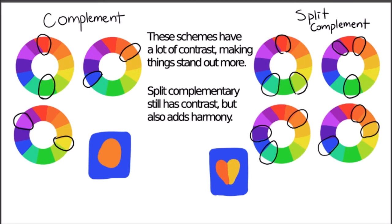A complementary color scheme uses the two opposites on the color wheel — so red and green, or yellow and purple, or blue and orange. Those are the very common complementary color schemes.